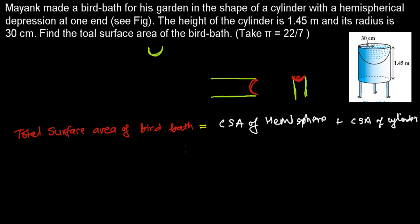Both figures have the same radius so it's very easy to calculate. Curved surface area of hemisphere is 2πr², and curved surface area of cylinder is 2πrh. We can take common 2πr and then we'll be left with r plus h.